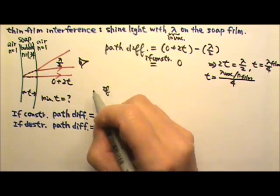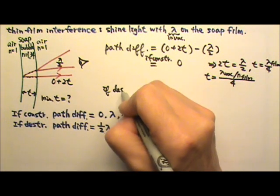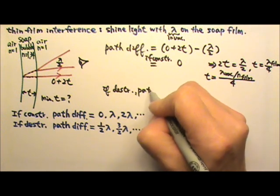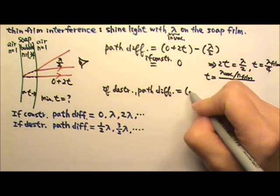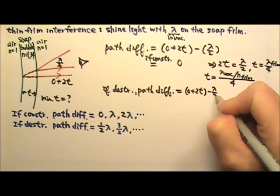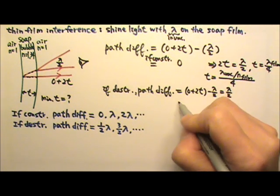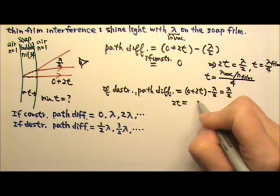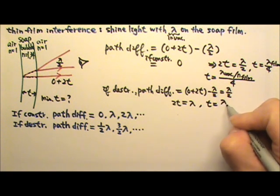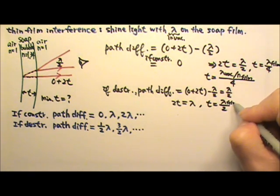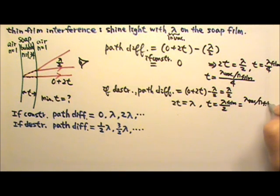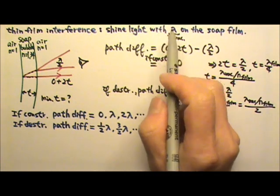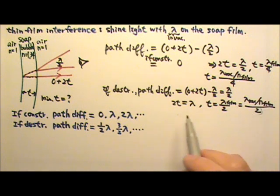If we do not see the reflection — if it is destructive interference — then the path difference equals half-wavelength. So: 0 plus 2T minus half-wavelength equals half-wavelength, which gives 2T equals 1 wavelength, meaning T equals wavelength divided by 2. Again, this is the wavelength inside the thin film, so I have to use the wavelength in vacuum divided by the N of the thin film, divided by 2 — that is, divide by 1.34 and then by 2.